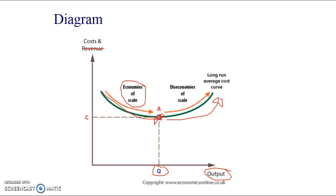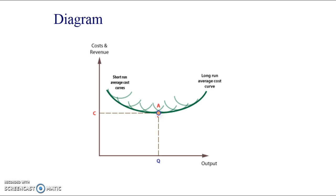Point A represents the point of productive efficiency in the long run — where our average costs in the long run are at their lowest point. This diagram is very similar to one you might have seen for short-run costs. These are the short-run cost curves, and sometimes we call this long-run cost curve an envelope curve, because it's enveloping these short-run ones.